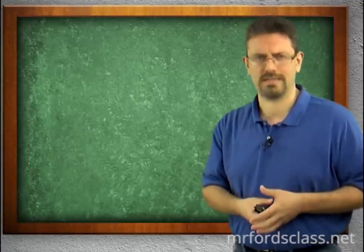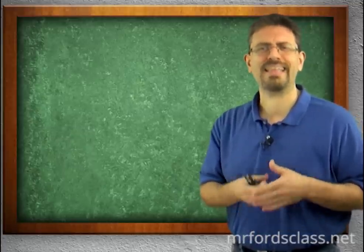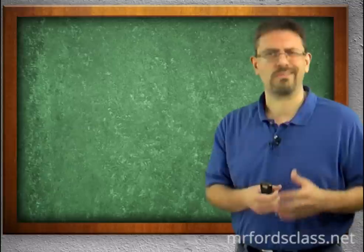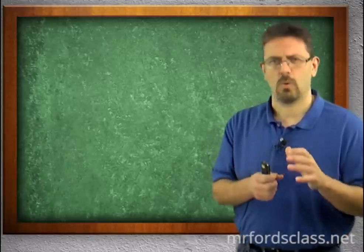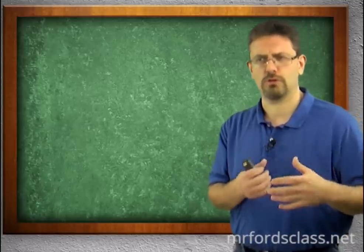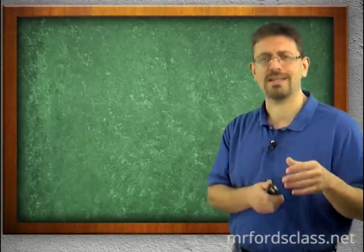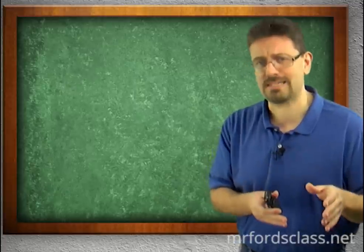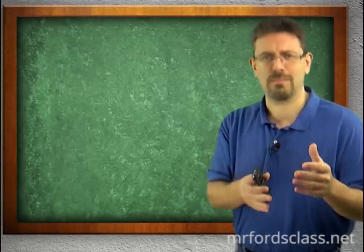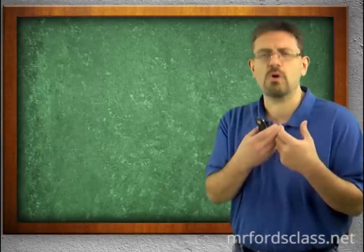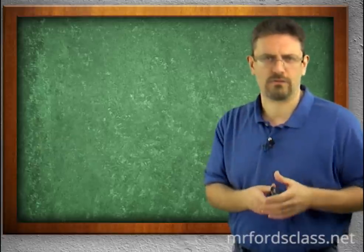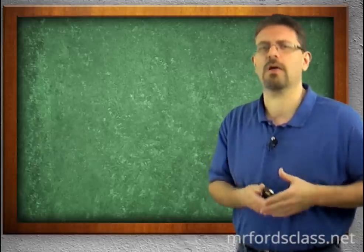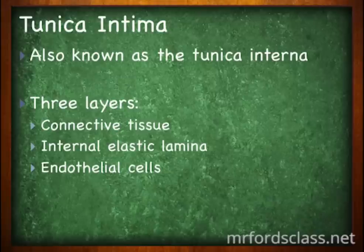The tunica intima, also known as the tunica interna, is the most internal of the layers. It is composed of three layers: a connective tissue layer, an internal elastic lamina, and an endothelial cells layer. The tunica intima sounds very intimate — and it is. It is close to and is the most internal of the layers.